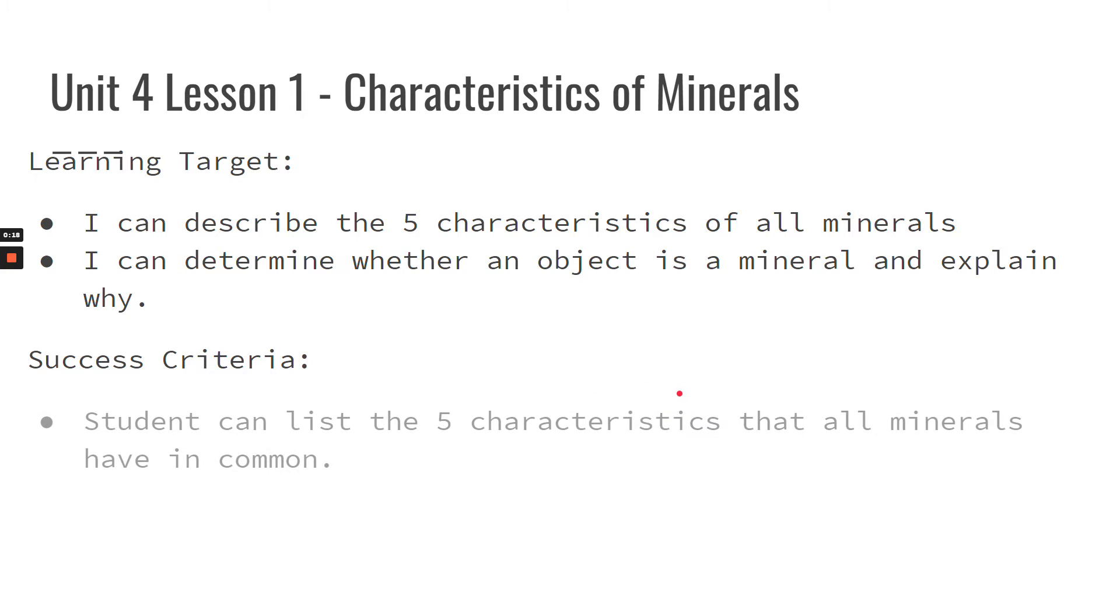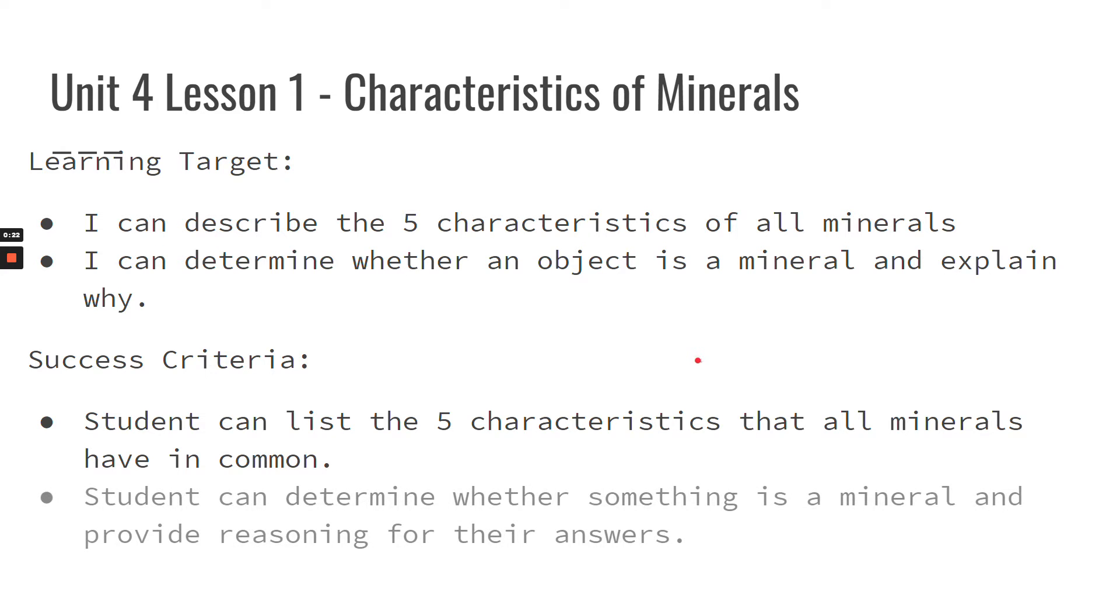So my success criteria: student can list the five characteristics that all minerals have in common and student can determine whether something is a mineral and provide reasoning for their answers. Basically today we're going to be looking at what minerals are and what makes something a mineral versus not a mineral.